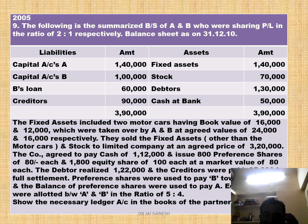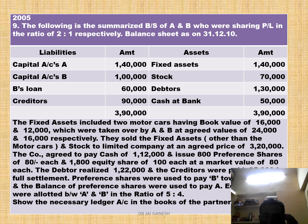They sold the fixed assets other than motor cars, and stock, to a limited company at an agreed price of Rs. 3,20,000. The company agreed to pay cash Rs. 1,12,000, issue 800 preference shares of Rs. 80 each, and 1,800 equity shares of Rs. 100 each at a market value of Rs. 80 each.